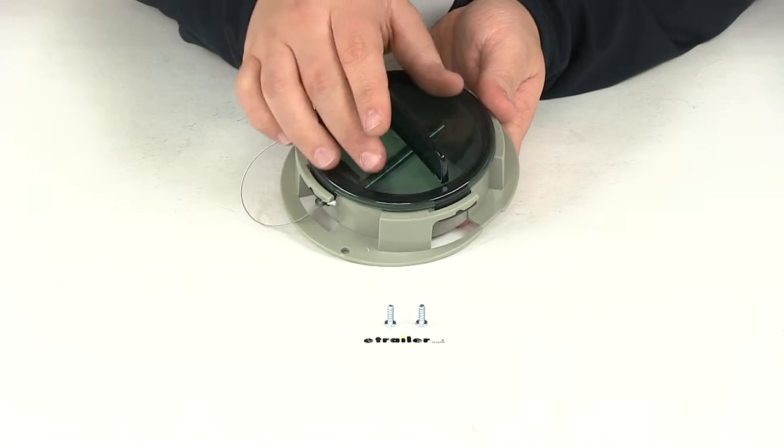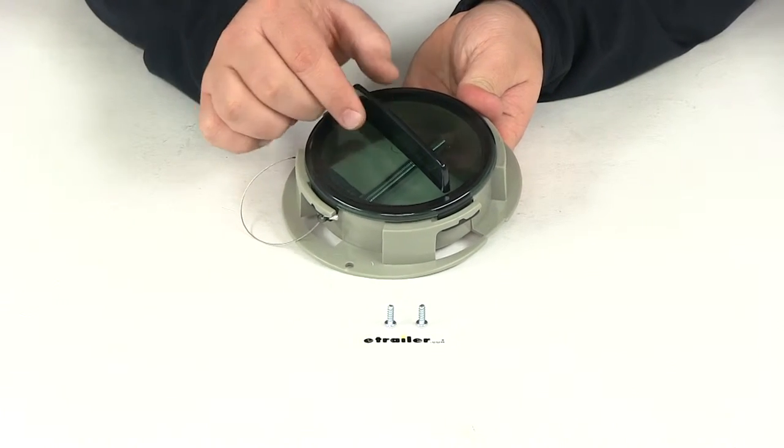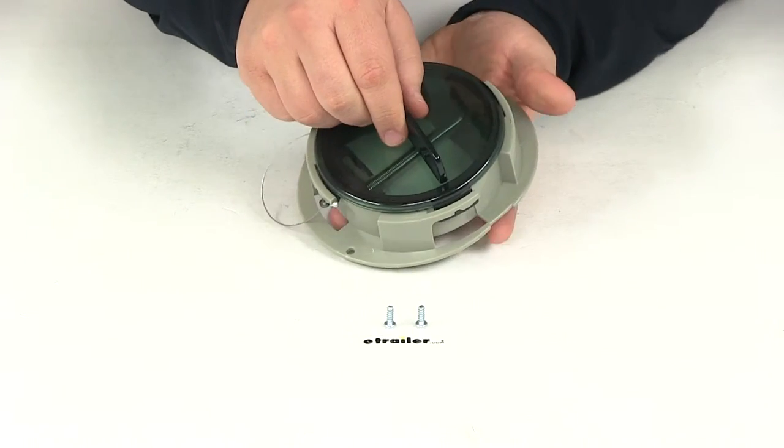The lens here is going to be constructed of a UV resistant polycarbonate. It's going to reduce the risk of shattering. It also has a nice raised handle that way you can easily get a grip on it and gain access to your documents.